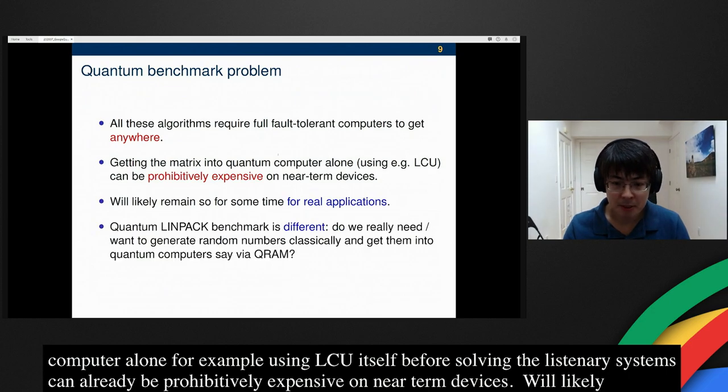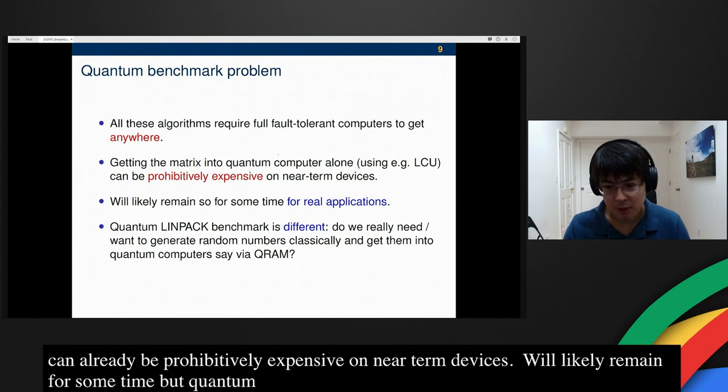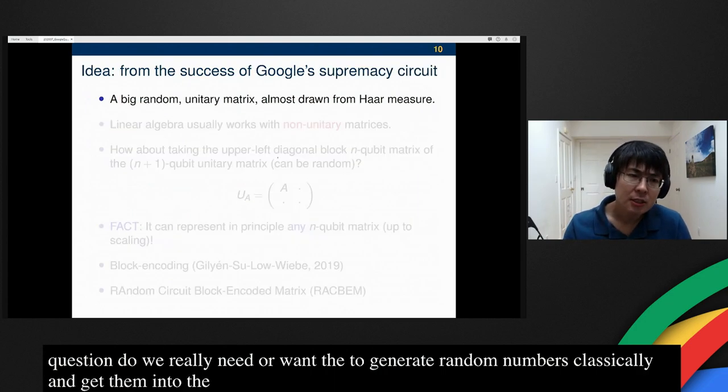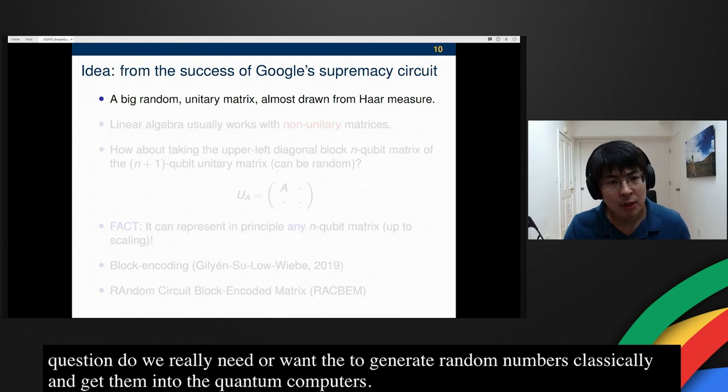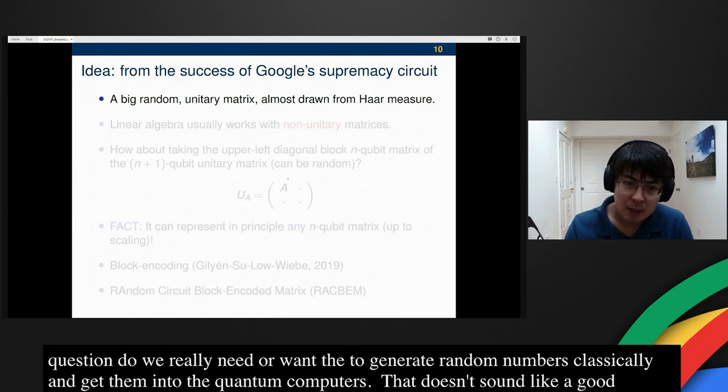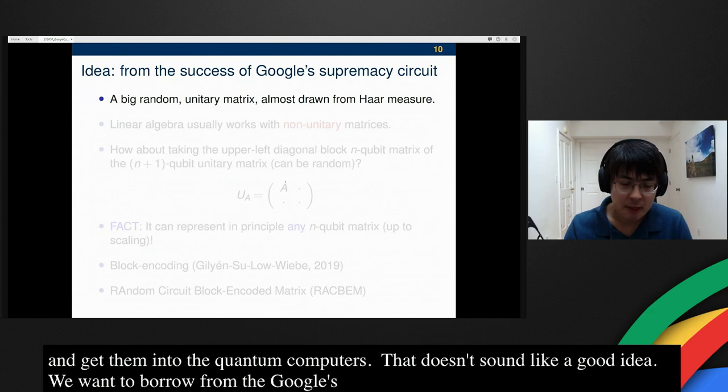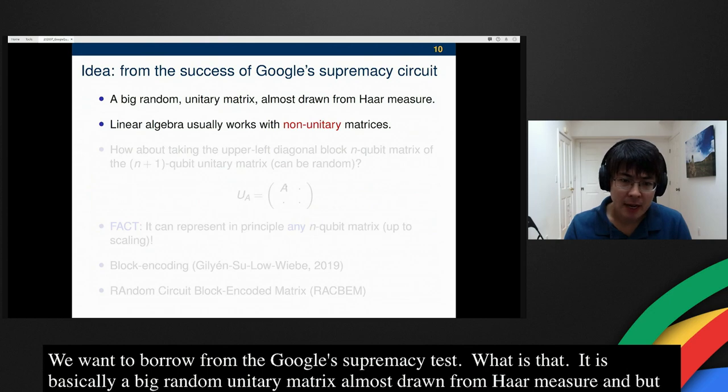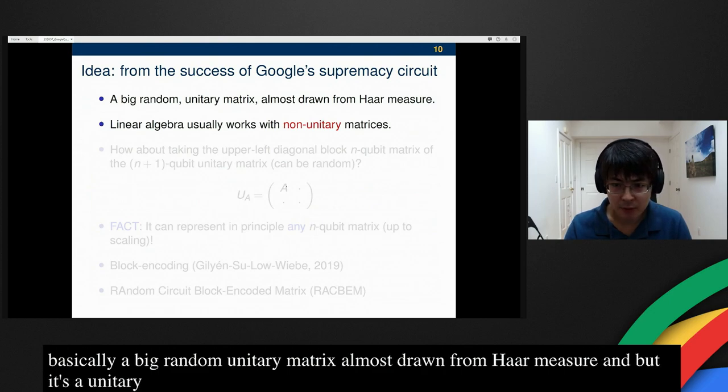The quantum LINPACK benchmark is a little bit different. We ask a different question. Do we really need or want to generate random numbers classically, and then get them into a quantum computer, say via QRAM? That doesn't sound like a great idea. So the idea is we want to borrow from the success of Google's supremacy test. What is Google's supremacy test? It's basically a big random unitary matrix. It's almost drawn from the Haar measure, but it's unitary.